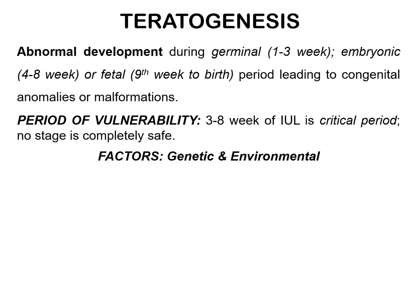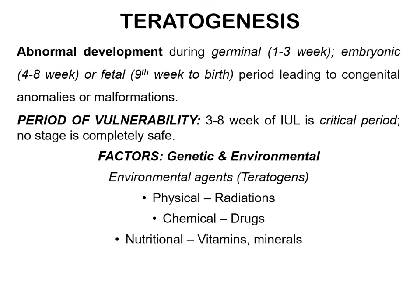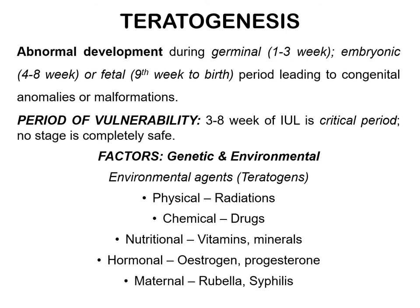The factors responsible for teratogenesis can be divided into genetic and environmental. The environmental agents responsible for producing congenital abnormalities are known as teratogens. Examples include physical agents such as exposure to radiation and X-rays; chemical agents such as intake of drugs by the mother; nutritional factors where excess or deficiencies of vitamins and minerals can lead to abnormalities; hormonal factors such as maternal intake of estrogen, progesterone, or maternal diabetes; and maternal infections like rubella, syphilis, and HIV.